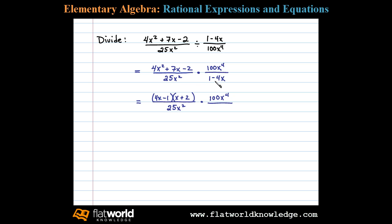Now I notice in the denominator here we have an opposite binomial factor, so at this point I'll rewrite 1 minus 4x as negative 1 times 4x minus 1.